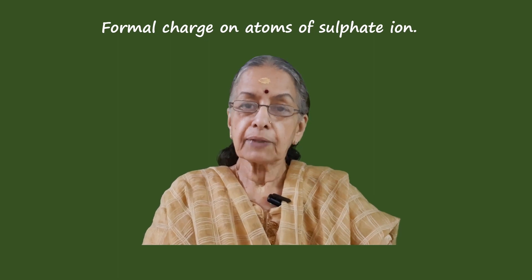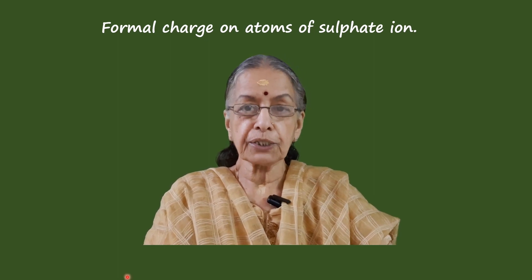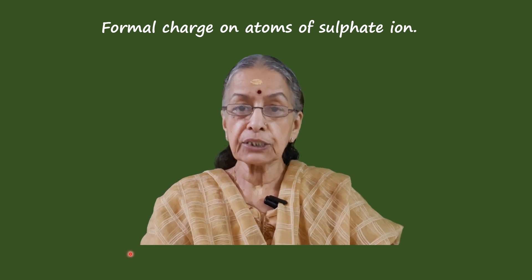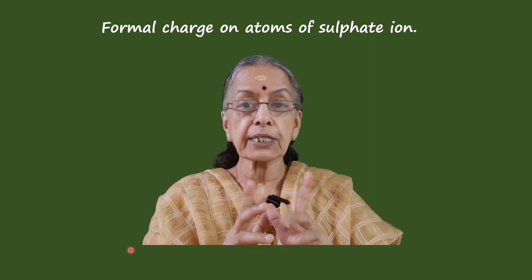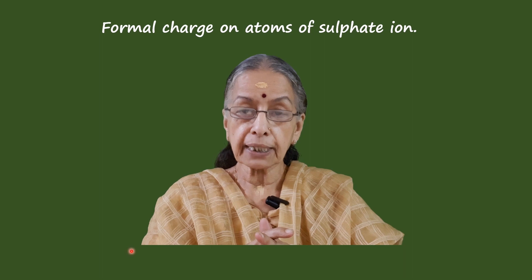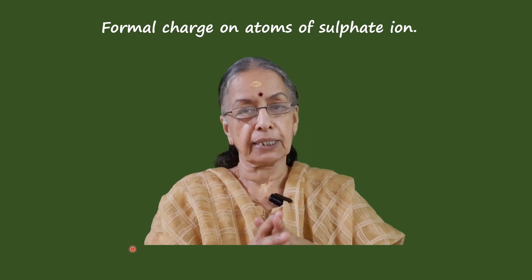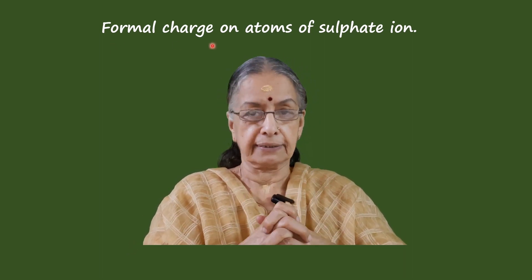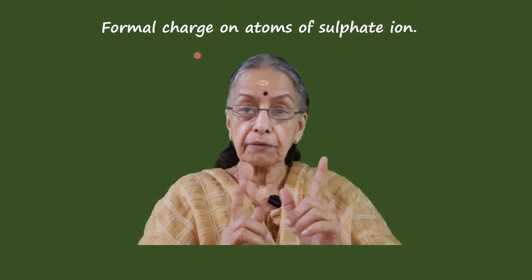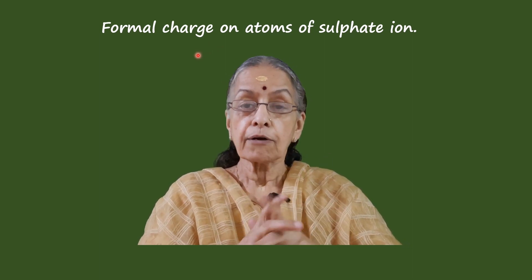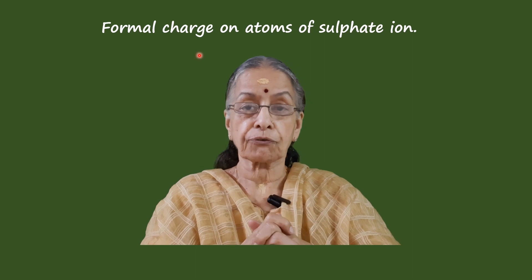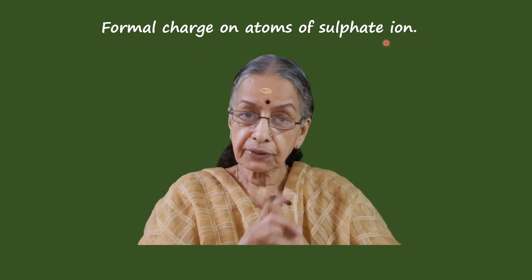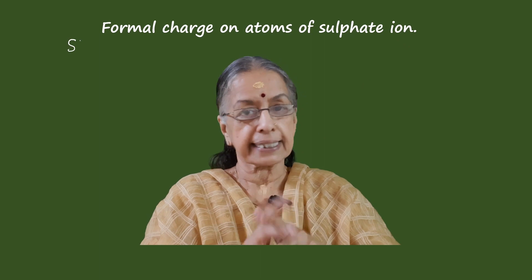Hello everyone, welcome to this new video from Guidance Education channel. In this video we are continuing Class 11 Chemistry Chapter 4: Chemical Bonding and Molecular Structure. Under this chapter we are doing formal charge, and in this video we will see how to calculate formal charge on the atoms of a polyatomic ion. We have taken sulfate ion as an example.